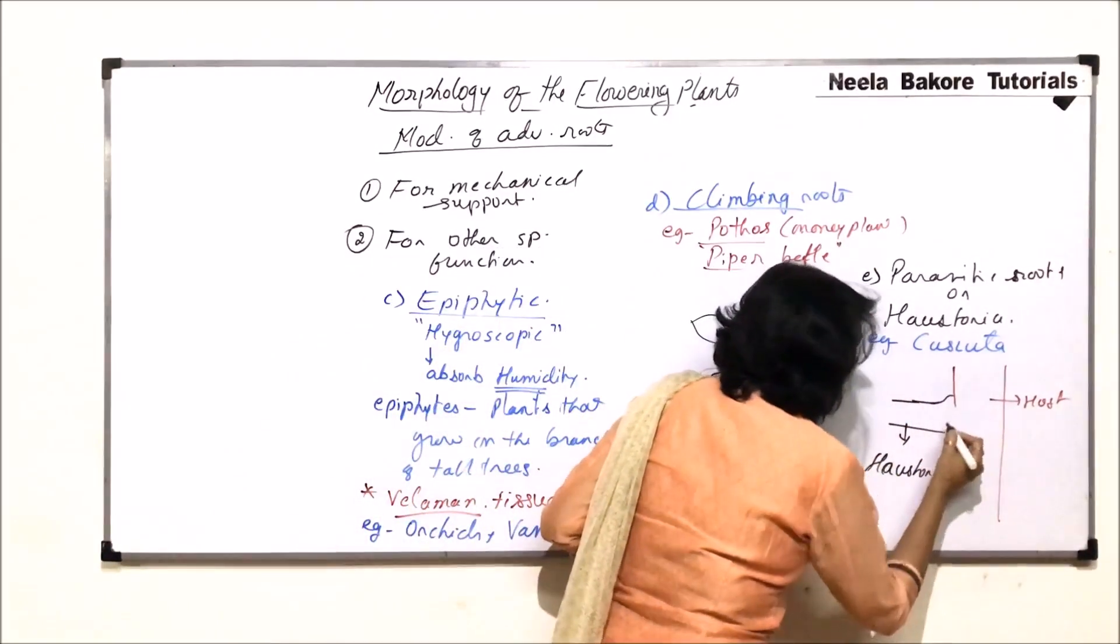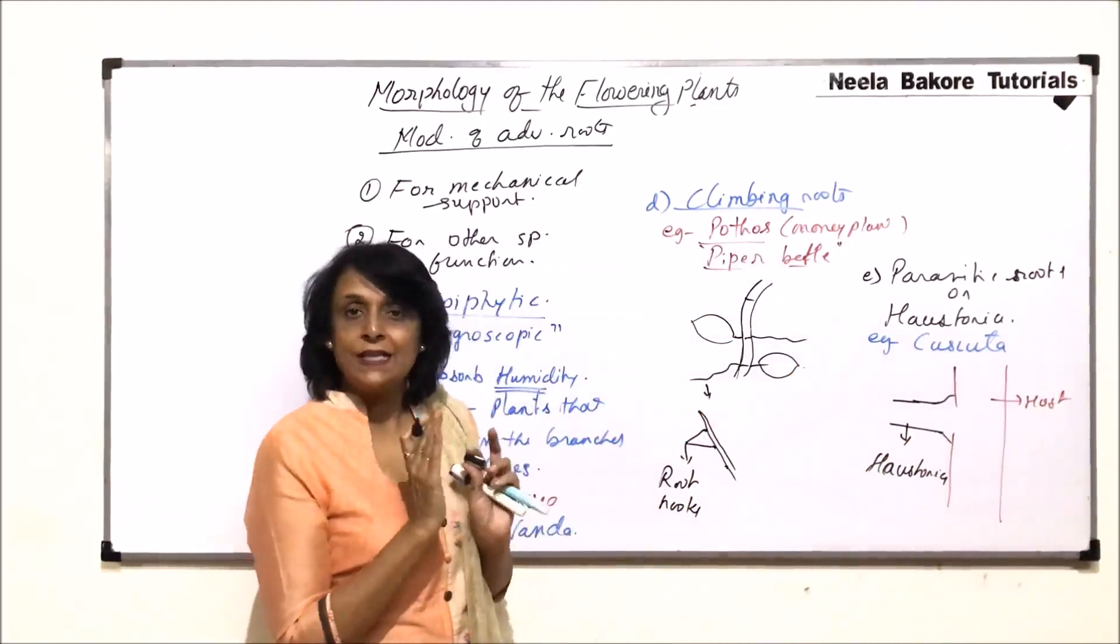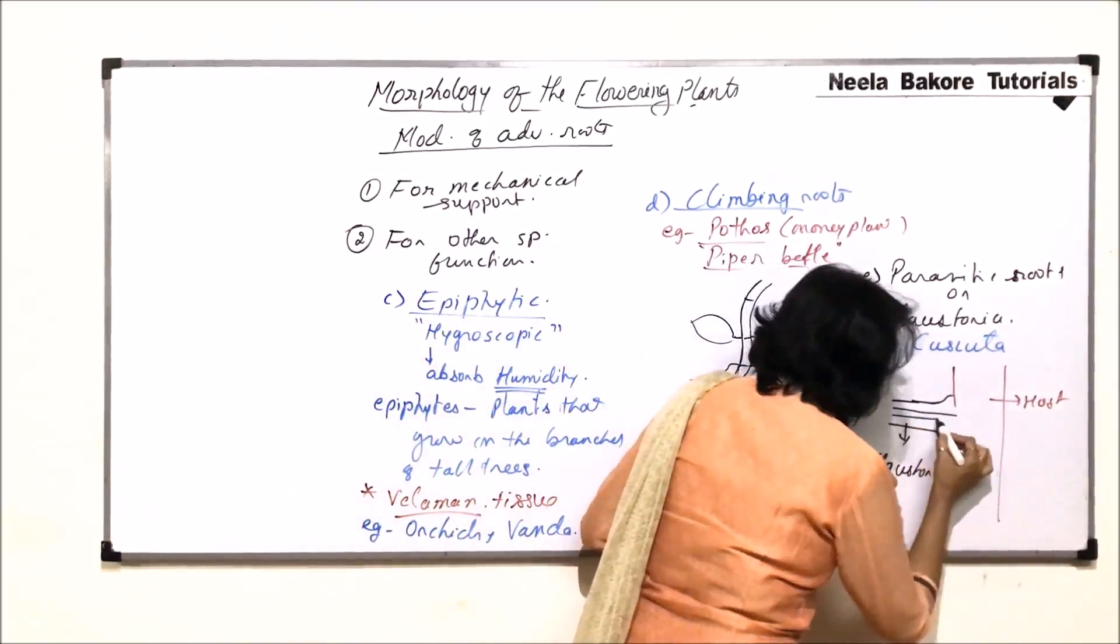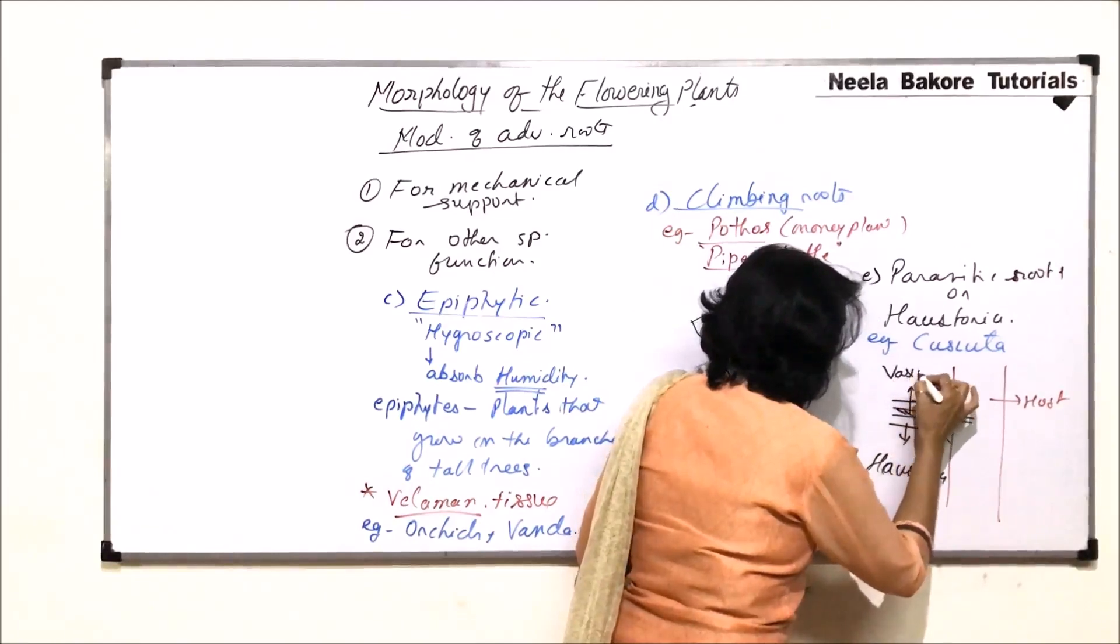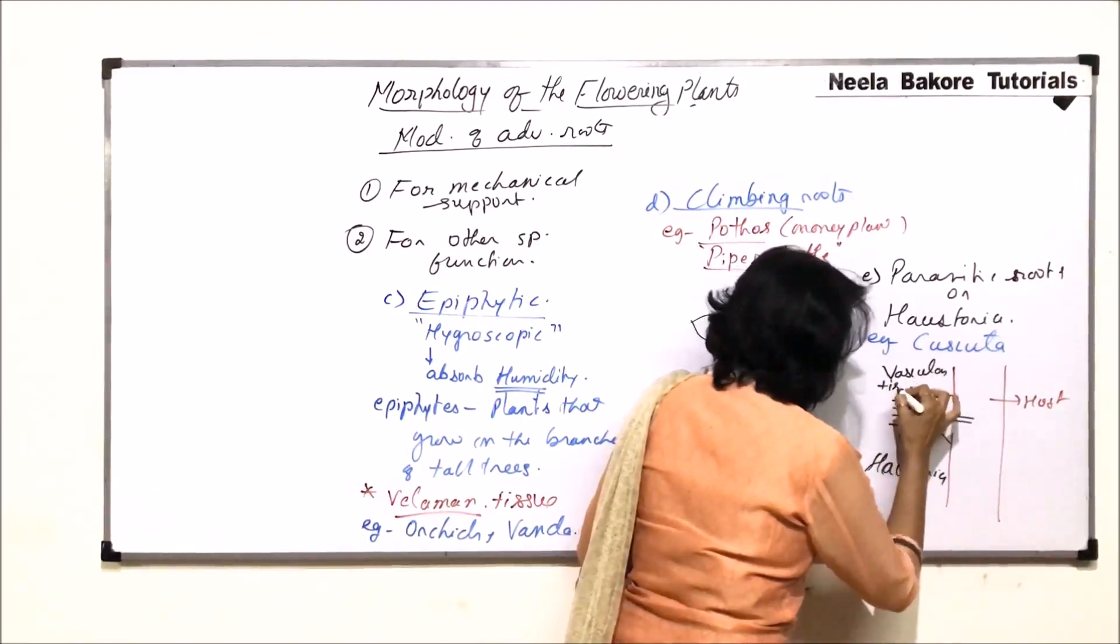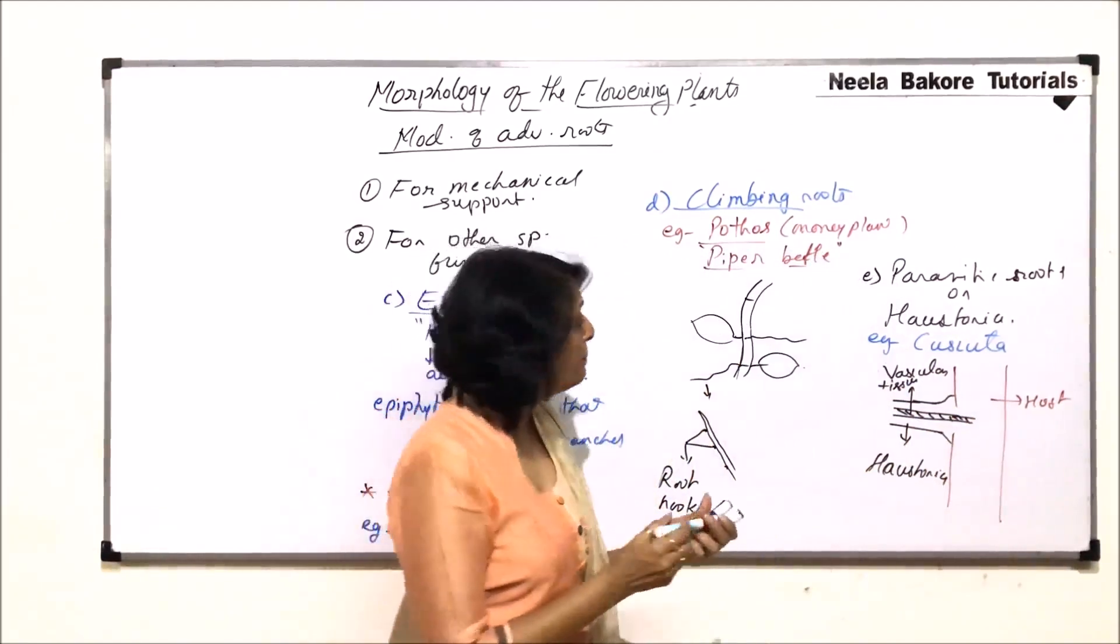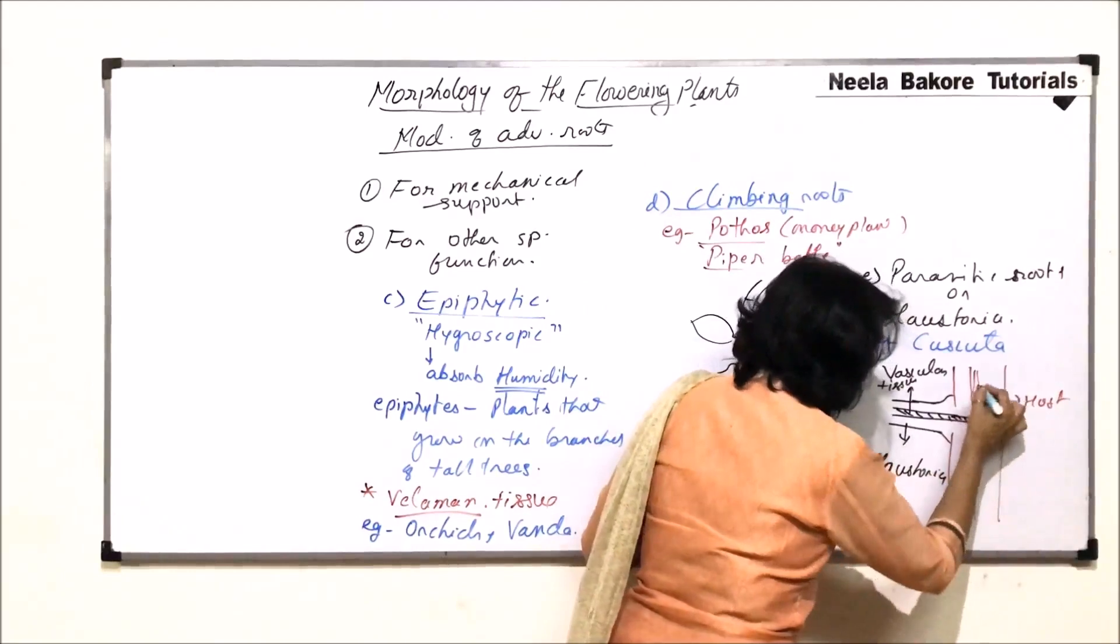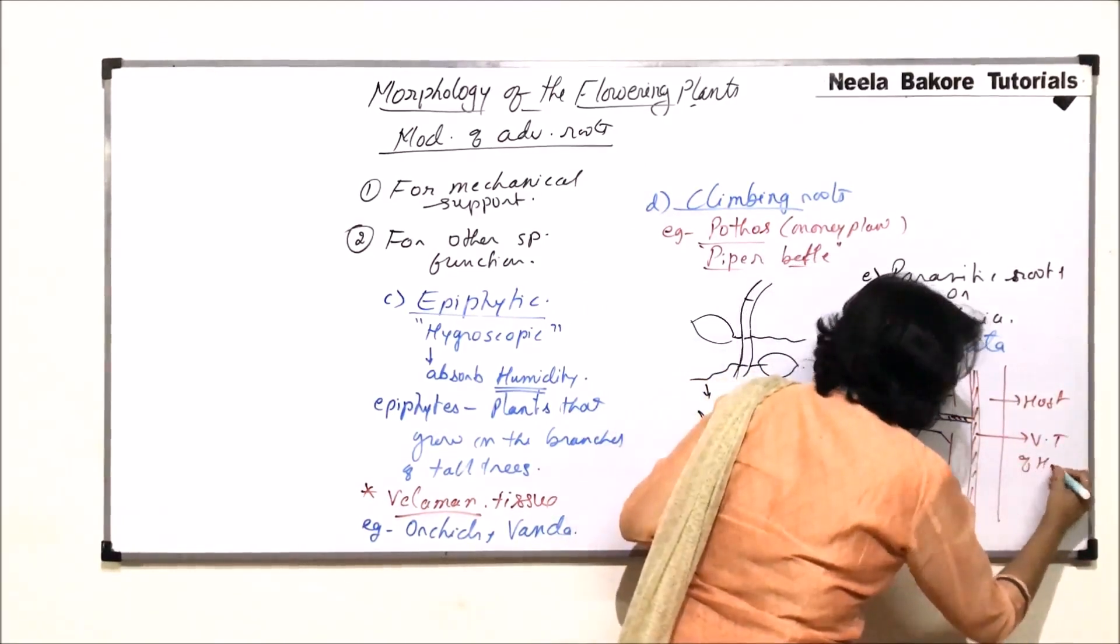the outer tissue remains outside. That is, epidermis, cortex and everything is outside. Only, the vascular tissue part penetrates. So, this part in the center is the vascular tissue.